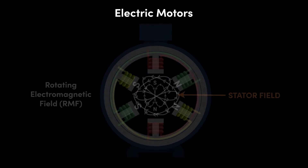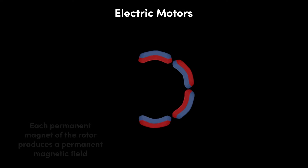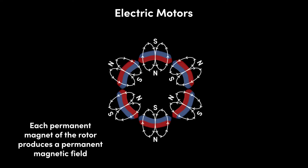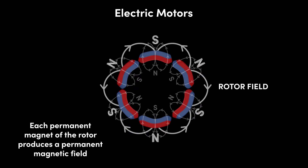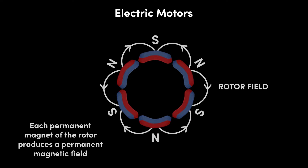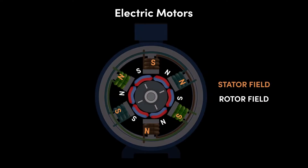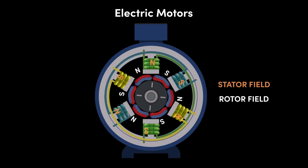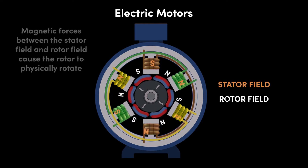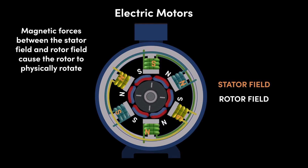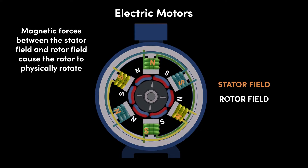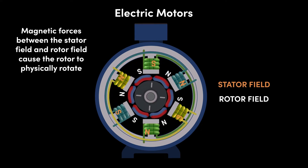Meanwhile, each permanent magnet of the rotor produces a permanent magnetic field, which we call the rotor field. The attractive and repulsive magnetic forces between the stator field, shown here in orange, and the rotor field, shown here in white, cause the rotor to physically rotate as the rotor field wants to maintain alignment with the stator field.